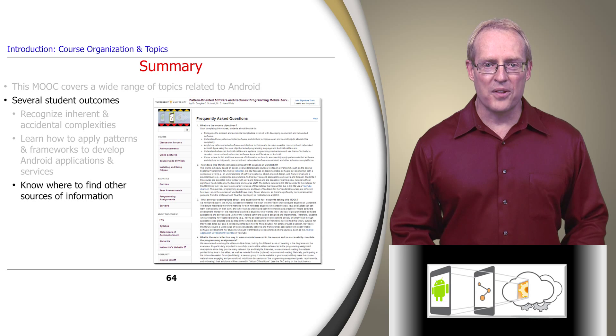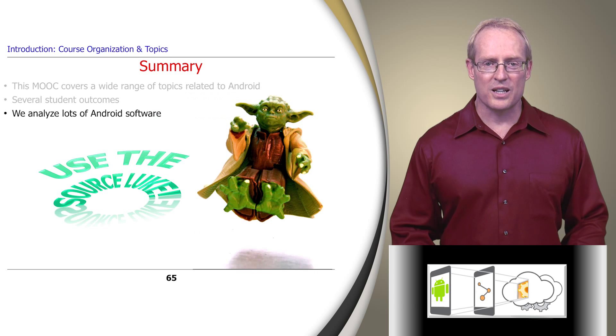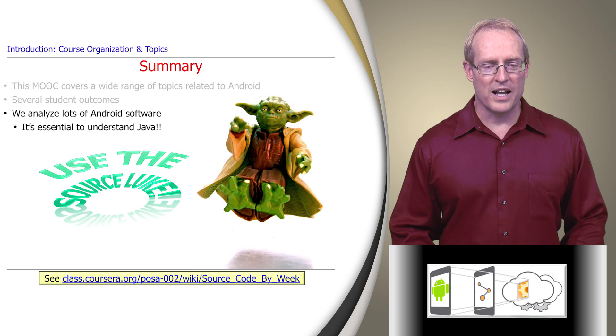Finally, if you follow up on all the links referenced on the slides, you'll know where to find additional sources of information on how to program mobile applications and services on Android handheld systems. We analyze lots of Android software throughout this MOOC, so you'll need a solid understanding of Java to follow along. Much of this code comes straight out of the Android open source release, which is available at this link. This link also provides several pattern-oriented applications that demonstrate key Java concurrency and interprocess communication mechanisms and frameworks, which we analyze in detail to showcase the applications of patterns and frameworks in the Android development environment.